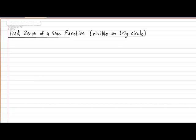For our first example, I would like to find the zeros of the function y equals 2 times sine of pi over 2 times x minus 1, subtract 1. When determining the zeros of a sine function, the first thing you should always calculate, and that you should never forget to calculate, is the period of the function.